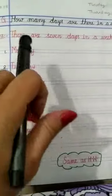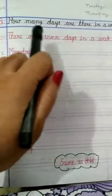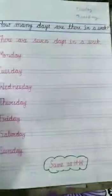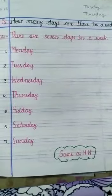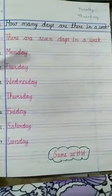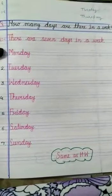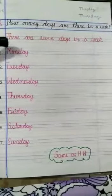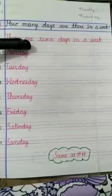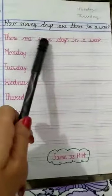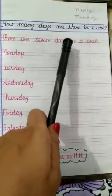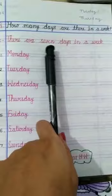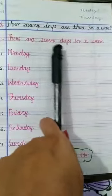Okay, like the question you can see: how many days are there in a week? So the question is, ek week mein kitne din hoote hain? And the answer is, there are 7 days in a week. So how many days are there in a week? 7 days.